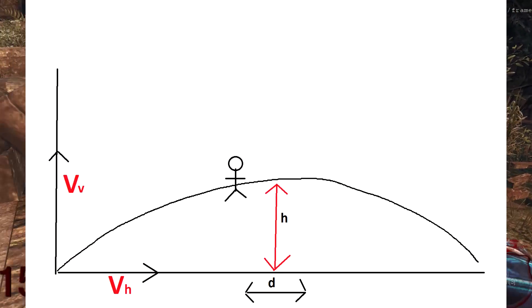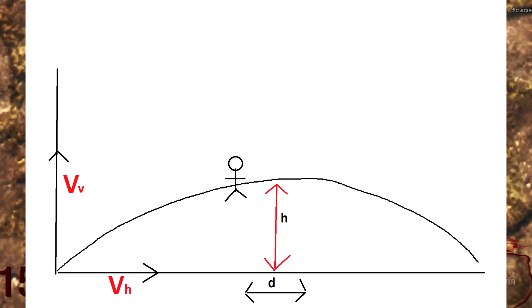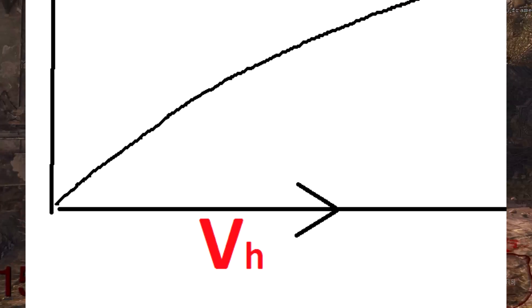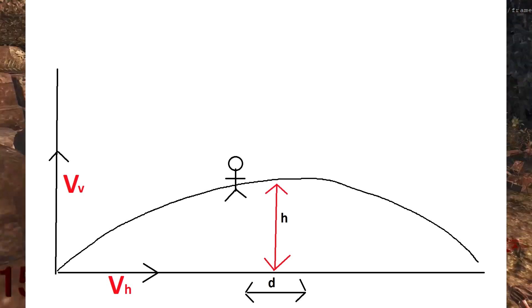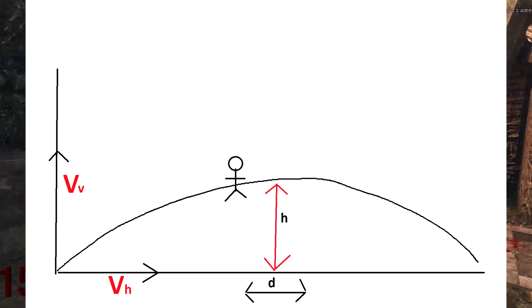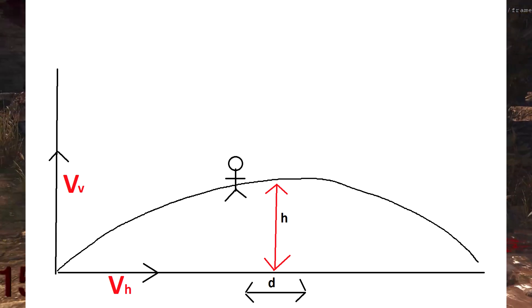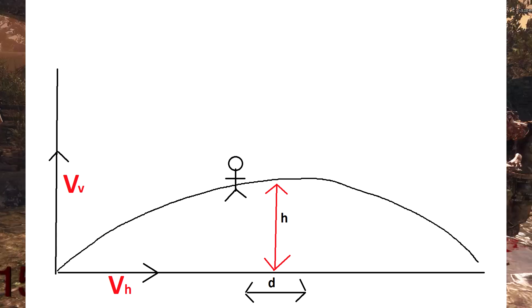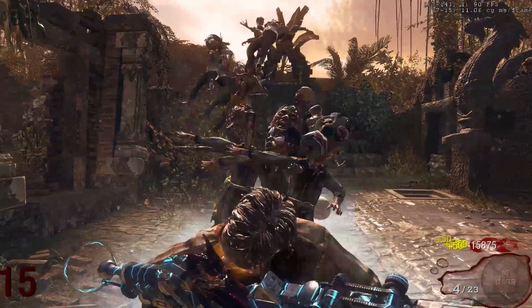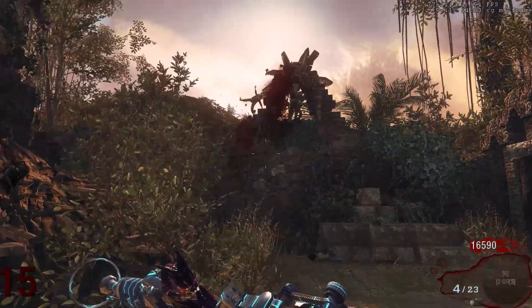The way you deal with projectile motion is to split the motion into two parts: vertical motion and horizontal motion. This is a bit different from the usual projectile motion question because here we have to find the velocity instead of being given it. I have to calculate the two speeds — vertical and horizontal — separately, to then get the actual resultant velocity.